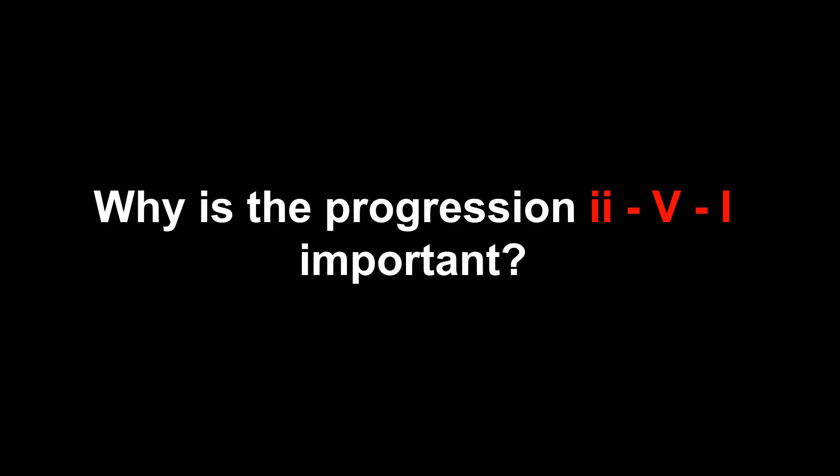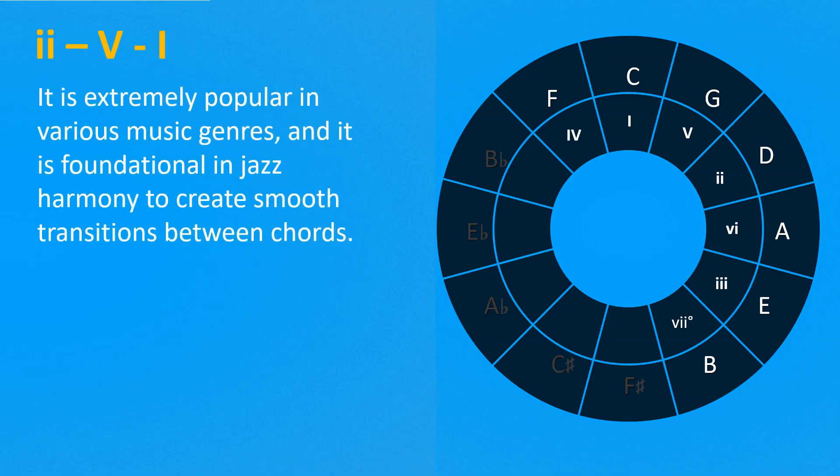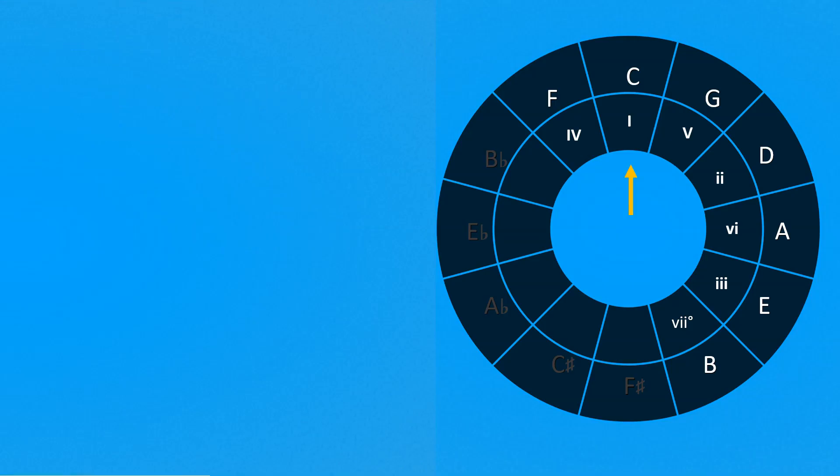Why is the progression 2-5-1 so important? The 2-5-1 progression is extremely popular in various music genres, particularly in jazz. Let's see its features.